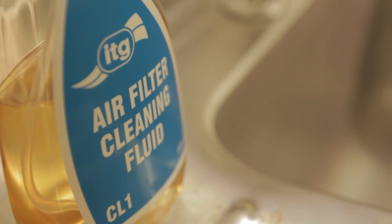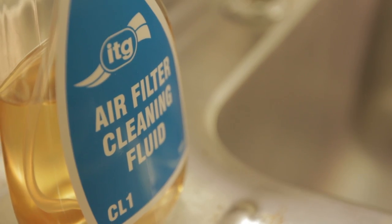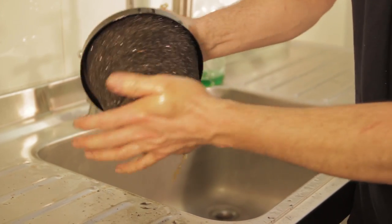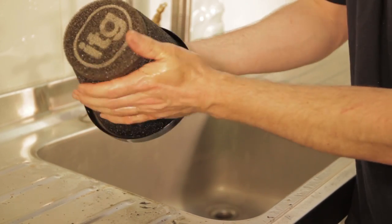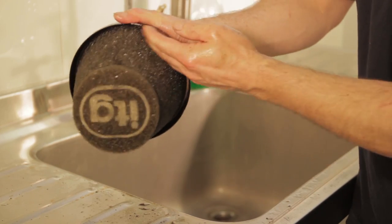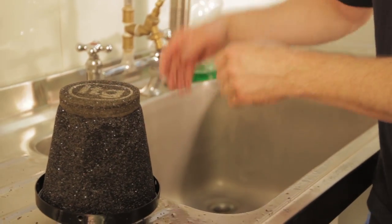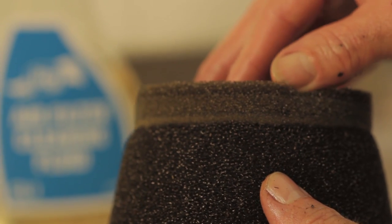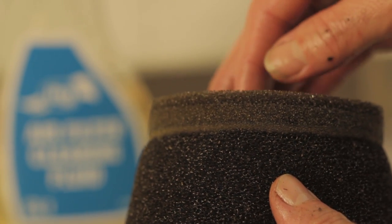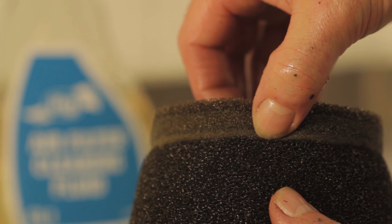Once you're fairly confident that you've managed to get that worked all the way through into all of the layers, you're now ready to start to rinse it out in water. On the majority of our filters, the foam is made in three layers: a coarse, a medium, and a fine layer.